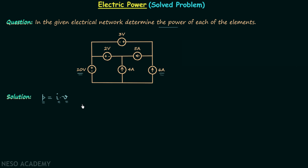Let's begin with the calculation of currents. There are three missing currents. The current in one branch is 4 amperes and in another branch is 5 amperes, and both currents are entering the same node. So by KCL the current in that branch equals 9 amperes, directed from right to left, and the current is entering the negative terminal.